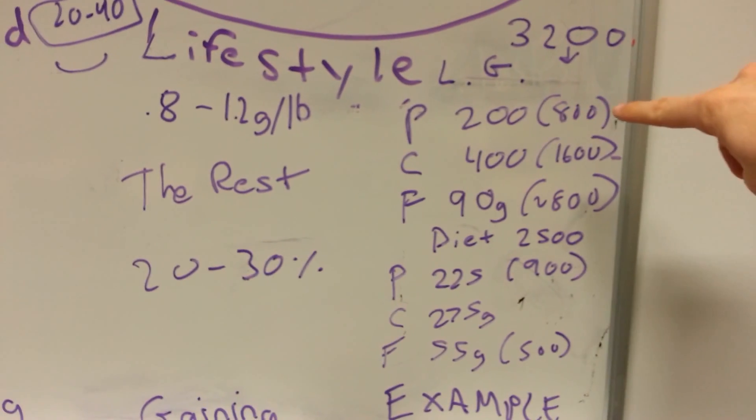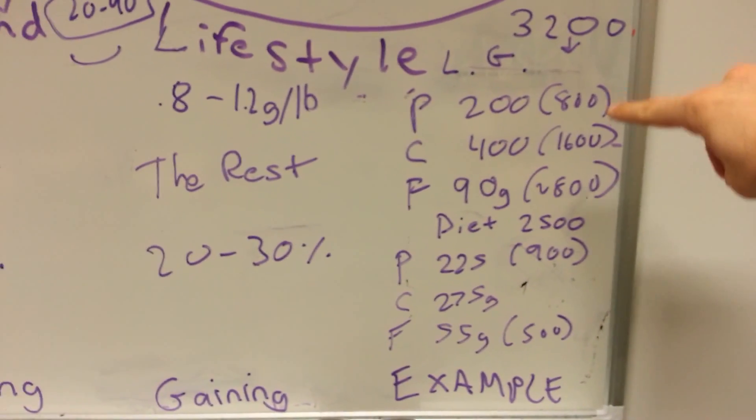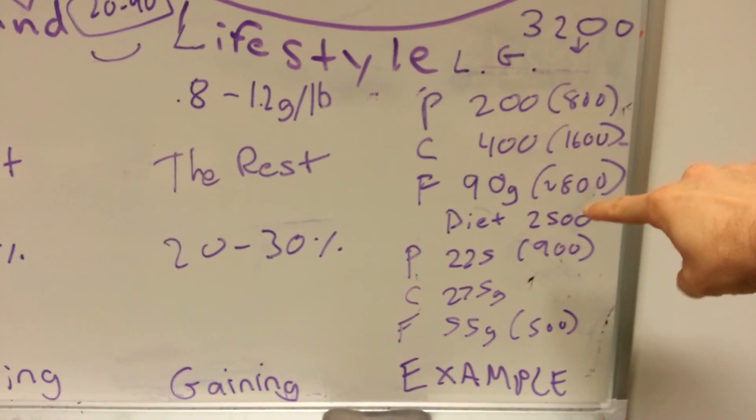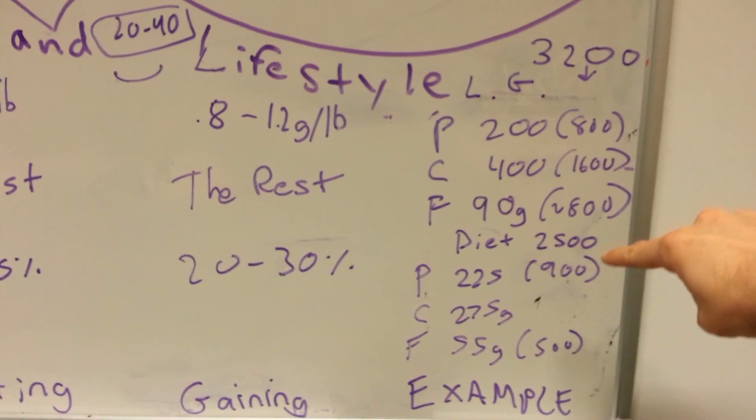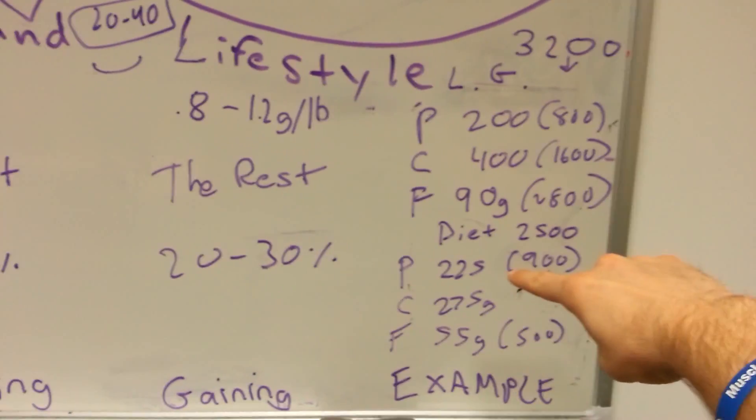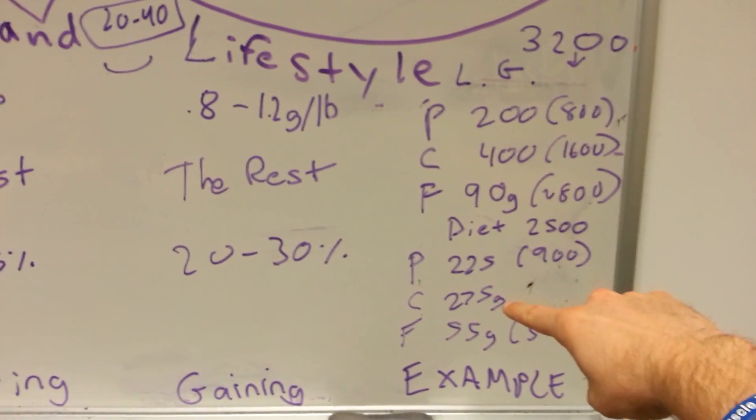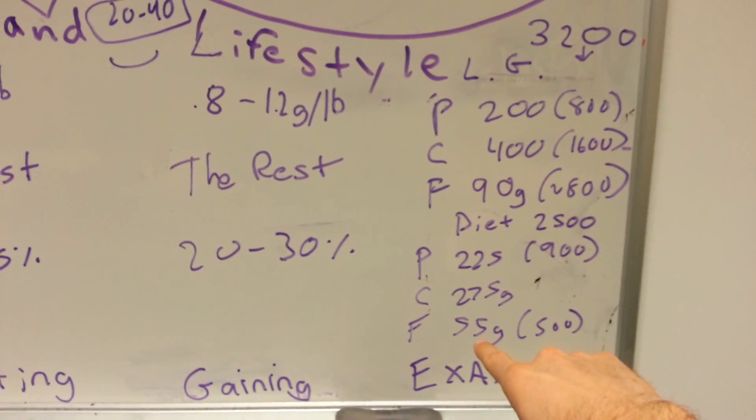Good example for a 200 pound male with a 3,000 calorie maintenance, put him in a 200 calorie surplus and we have 200 grams of protein, 400 grams of carbs, 90 grams of fat. He's dieting: we've dropped him down to a 500 calorie deficit, added some cardio, up his protein a little bit, 225 protein, 275 carbs, 55 fat.